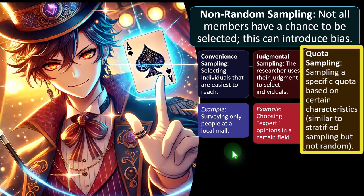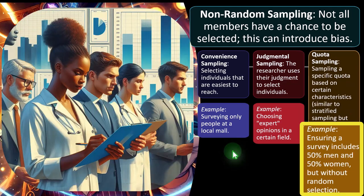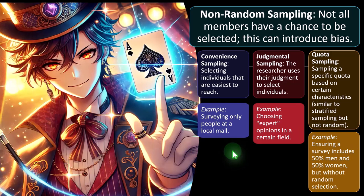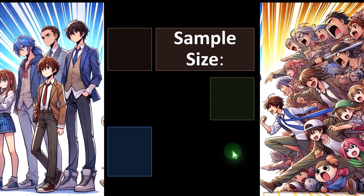Quota sampling means sampling a specific quota based on certain characteristics — similar to stratified sampling, but not random. Example: ensuring a survey includes 50% men and 50% women, but without random selection. If you took a completely random sample, you might by randomness alone end up with some kind of imbalance, which might lead you toward stratified sampling — sampling men and women separately — or setting a quota for an even split.